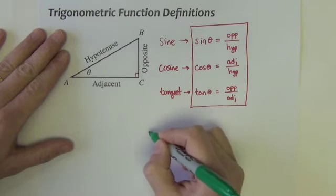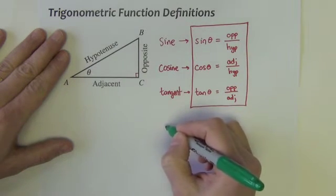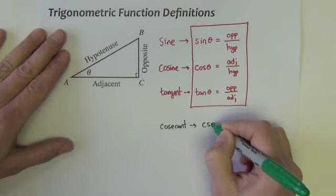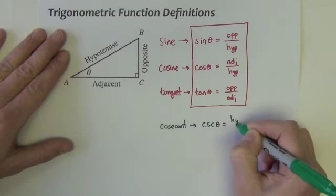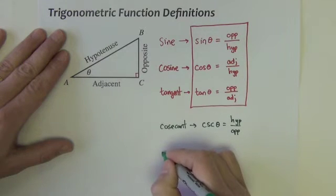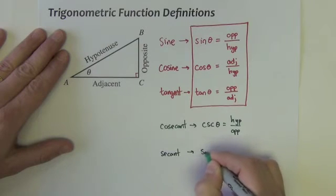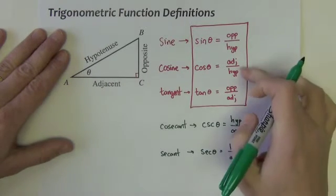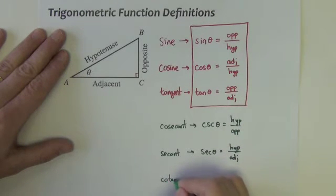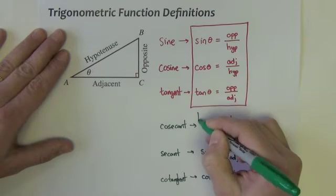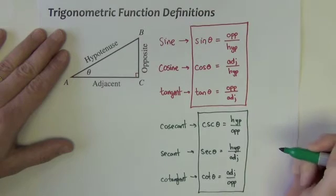There are, the first one, I'll write out the word, the function, and then the abbreviation, like above. There is cosecant, abbreviated C-S-C. The cosecant of an angle theta is equal to the hypotenuse divided by opposite. It's just sine's reciprocal. The next one is secant, abbreviated S-E-C, it is the hypotenuse divided by the adjacent. So it's just cosine's reciprocal. And the last one is cotangent, abbreviated C-O-T. It is the adjacent divided by the opposite. It's the reciprocal of tangent.